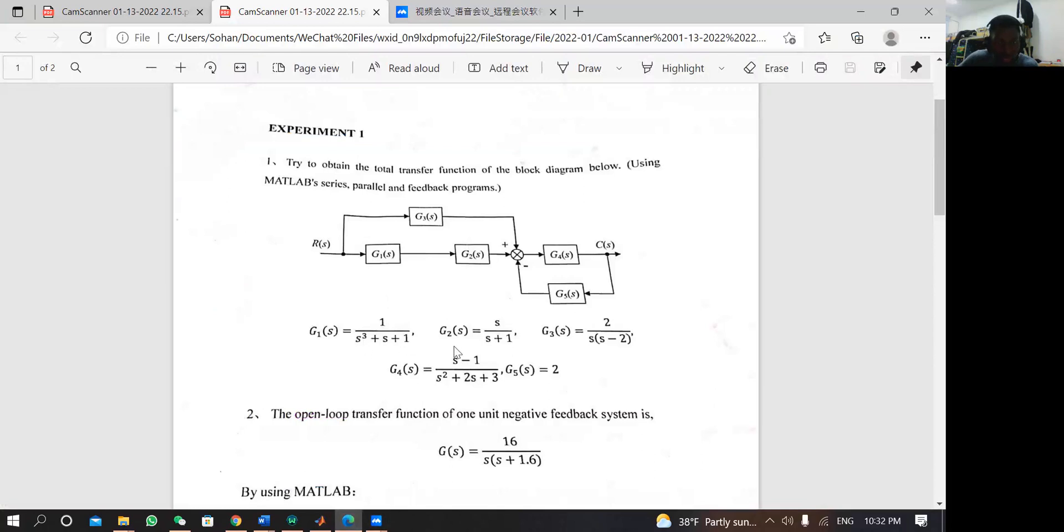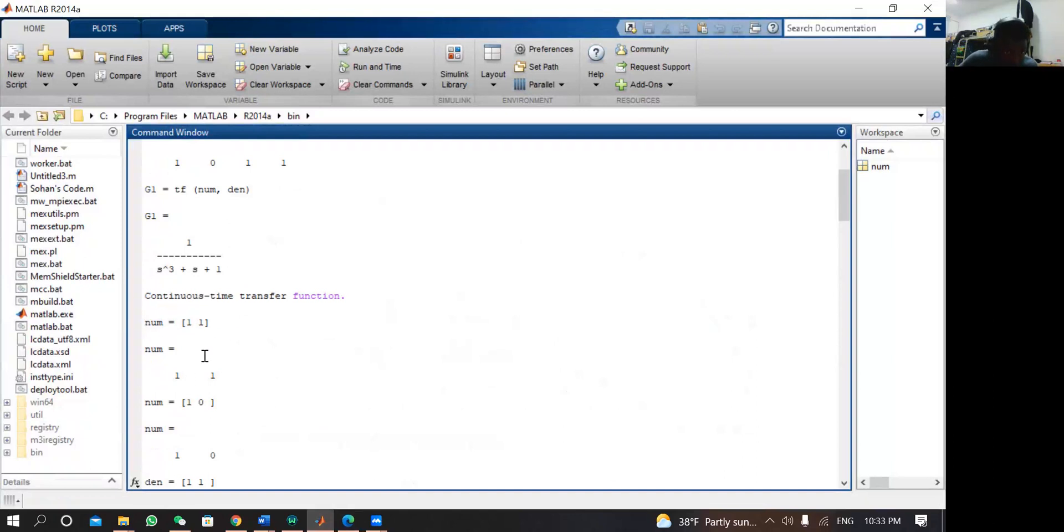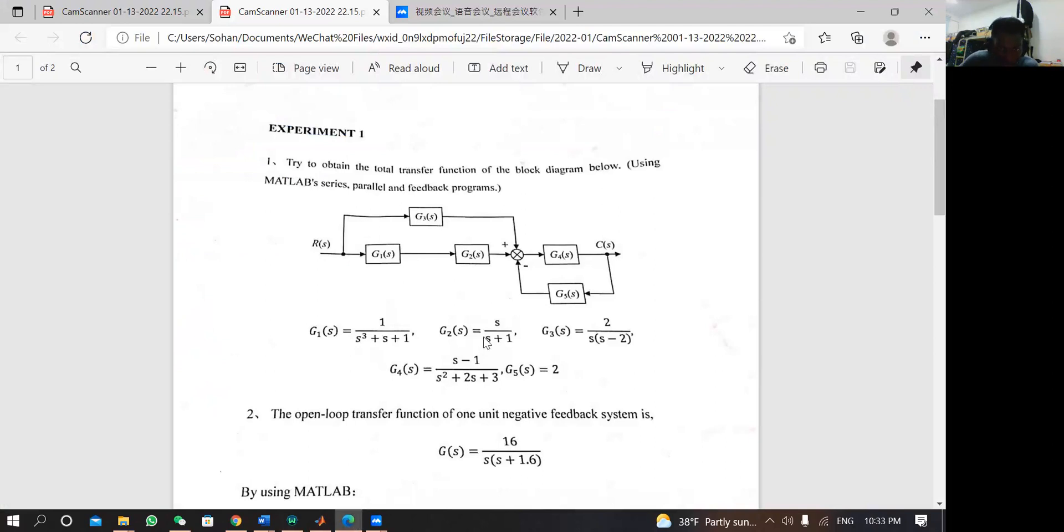We are going to write the equation for G2. Here we have S, so we write 1 as the coefficient of S, but we don't have a constant here, so the constant is 0. We write 1, 0 for numerator. This was a mistake, so don't try this. Here is the numerator: 1, 0. And then the denominator we have 1, 1, because we have S is 1, coefficient of S is 1, and then we have a constant which is 1 as well.